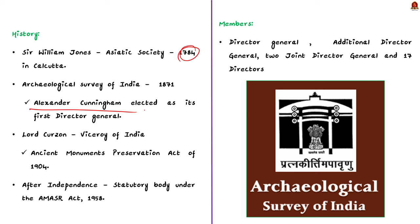Until 1904, there was no legislation to protect important monuments. During the time of Lord Curzon, this changed with the passage of the Ancient Monuments Preservation Act 1904, which gave ASI a firm footing. Since then, ASI has been successfully conducting excavations, rediscovering the past, and safeguarding important heritage structures. After independence, it became a statutory body under the AMASR Act 1958. ASI is headed by a Director General headquartered in New Delhi, assisted by an Additional Director General, two Joint Director Generals, and 17 Directors.